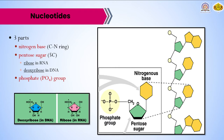The nitrogen bases are of five types: adenine, guanine, cytosine, thymine, and uracil. Uracil is absent in DNA; instead thymine is present. In RNA, thymine is absent and uracil is present. Purines are double ring compounds and pyrimidines are single ring compounds. The two types of purines are adenine and guanine, and the three types of pyrimidines are cytosine, thymine, and uracil. Purines always bind with pyrimidines — A bonds with T by a double hydrogen bond, and C binds with G by a triple hydrogen bond.